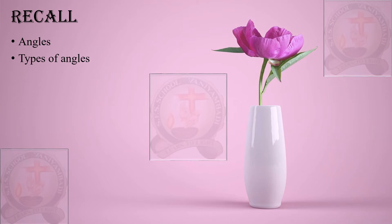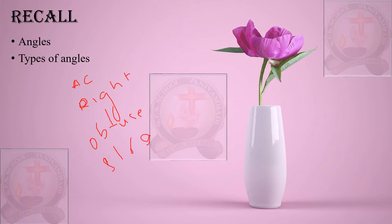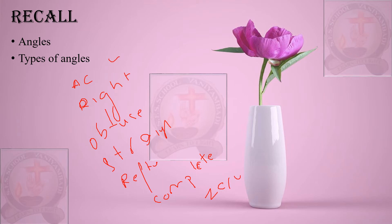Based on the measurement of angles, we classify them into different types: acute angle, right angle, obtuse angle, straight angle, reflex angle, complete angle, and zero angle.